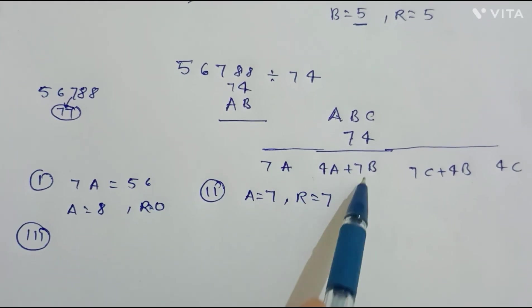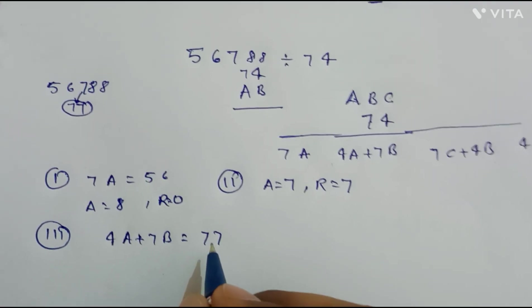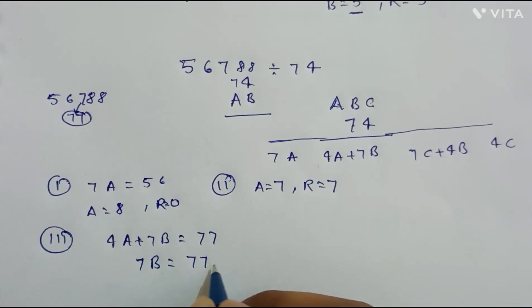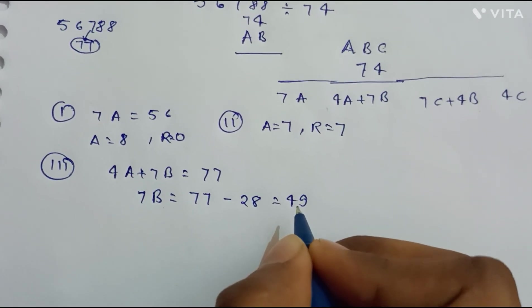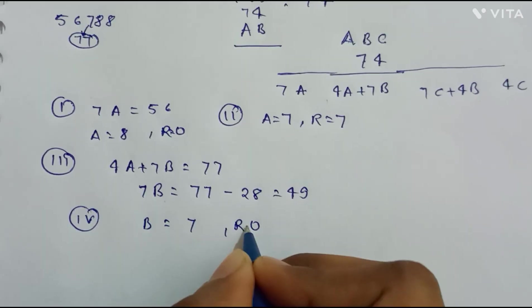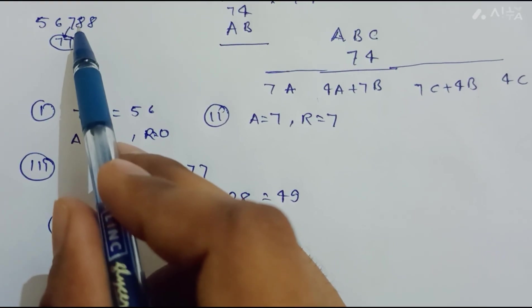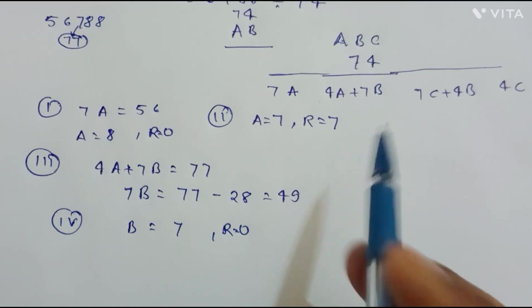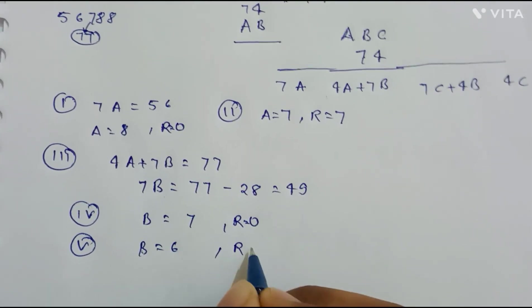Our next step is to equate 4a plus 7b with the number 77. Putting a equals 7, we get 7b equals 77 minus 28, which comes out to be 49. Now if we take b equals 7, the remainder comes to 0. When we place this 0 below the next digit 8, it becomes 08, and solving that equation would give a negative number. So we rectify this step by taking b equals 6, and then the remainder comes out to be 7.